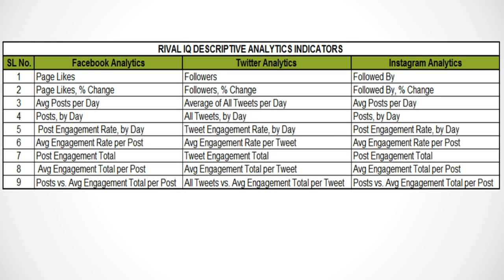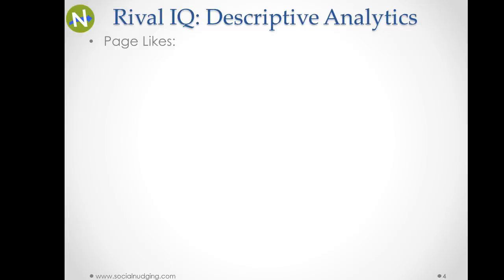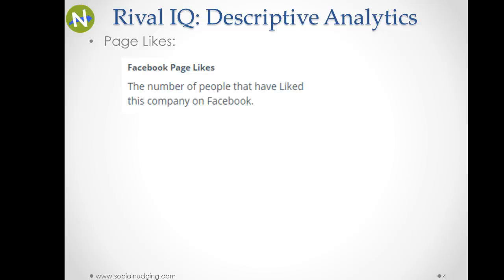In previous videos we discussed that there are basically nine types of descriptive analytics reports that you get from your RivalIQ account. We are going to discuss each of these reports and how you can create graphs, bar charts, pie charts, or line charts. The first one is page likes — the definition of page likes in RivalIQ is the number of people that have liked this company on Facebook.